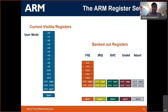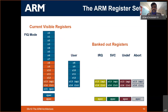The program counter holds the address of the currently executing instruction. The stack pointer keeps the address that is copied to the program counter when an interrupt instruction arrives. The link register loads the address into the stack pointer when moving from one mode to another. Registers R0 to R12 are general purpose registers — like the accumulator — used for arithmetic and logic operations such as addition and subtraction.